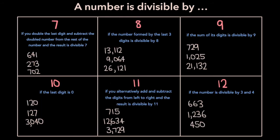Now let's go through the divisibility rules for the numbers 7 through 12. A number is divisible by 7 if you double the last digit and subtract that doubled number from the rest of the number, and the result is divisible by 7. So for example, let's take a look at the number 641. The last digit is 1, so if we double that, we get 2. And if we subtract 2 from the rest of the number, which is 64 — that is, 64 minus 2 — we get 62. 62 is not divisible by 7, which means 641 isn't either.